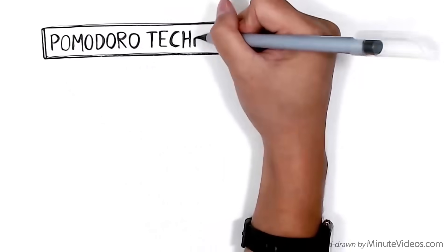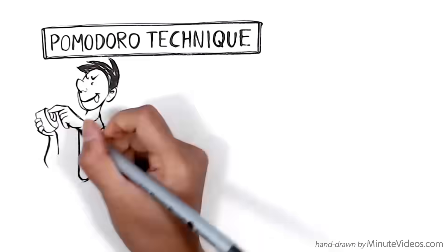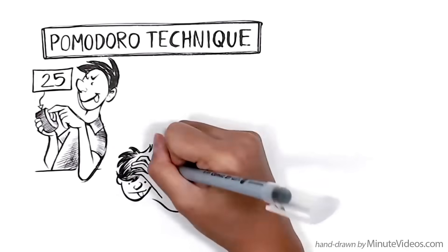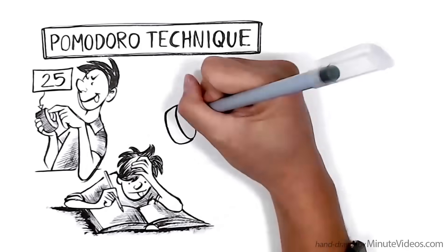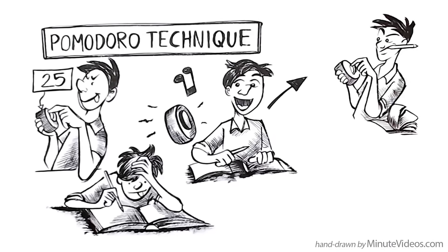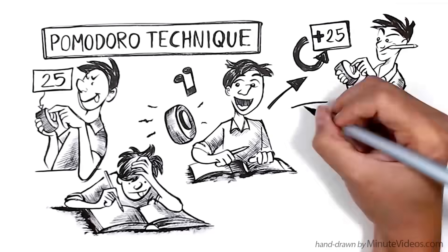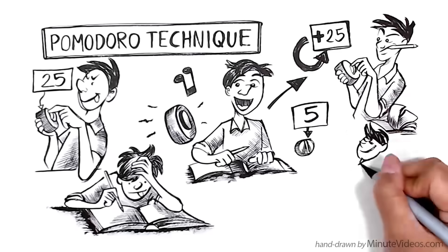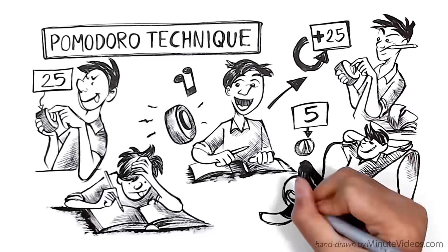Pomodoro Technique. Set a timer to 25 minutes when you focus entirely on your studies. When the timer rings, relax for 5 minutes. If you want to continue, just set the timer again. The small breaks in between are relaxing and motivating to keep going.